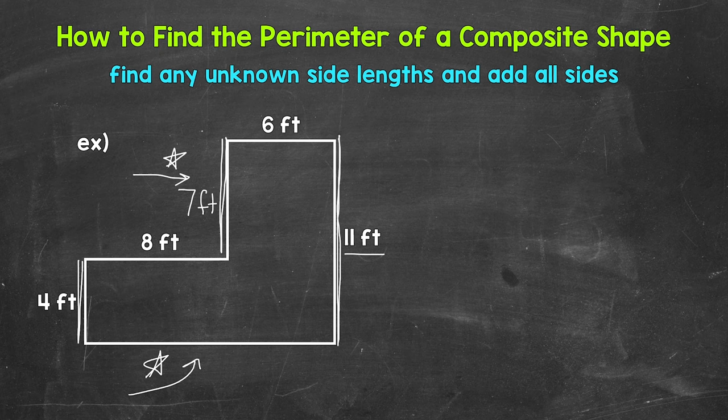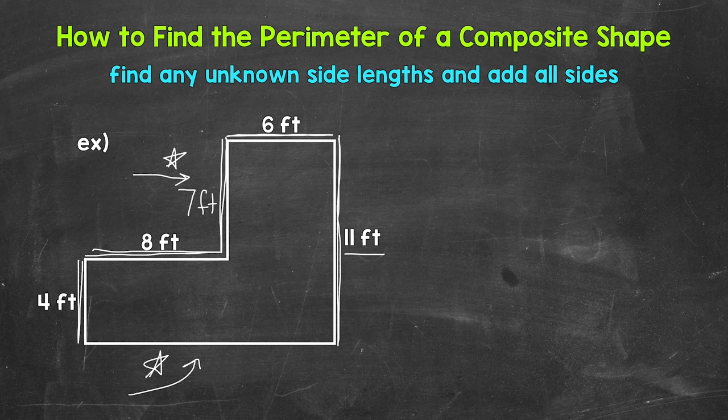We need to use what we are given to figure out that missing side length. So let's use these two horizontal lines — here we have 8 feet and we have 6 feet. Those two sides are going to equal that missing side length. So 8 feet plus 6 feet gives us 14 feet. That missing side length measures 14 feet. Now we can add all of the sides in order to find the perimeter.